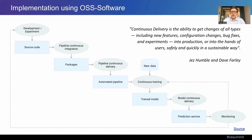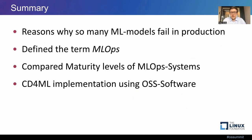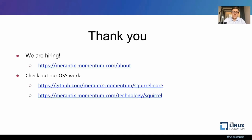So I've reached the end. We talked about reasons why so many ML models fail in production, defined the term MLOps, looked at the maturity model to assess the level of automation in an MLOps system, and I showed which open source tools we use to build such automated ML systems. Thank you for your time. If you want to build such systems yourself, we are always hiring — take a look at our website and our open source work. Thank you, and have a great day.